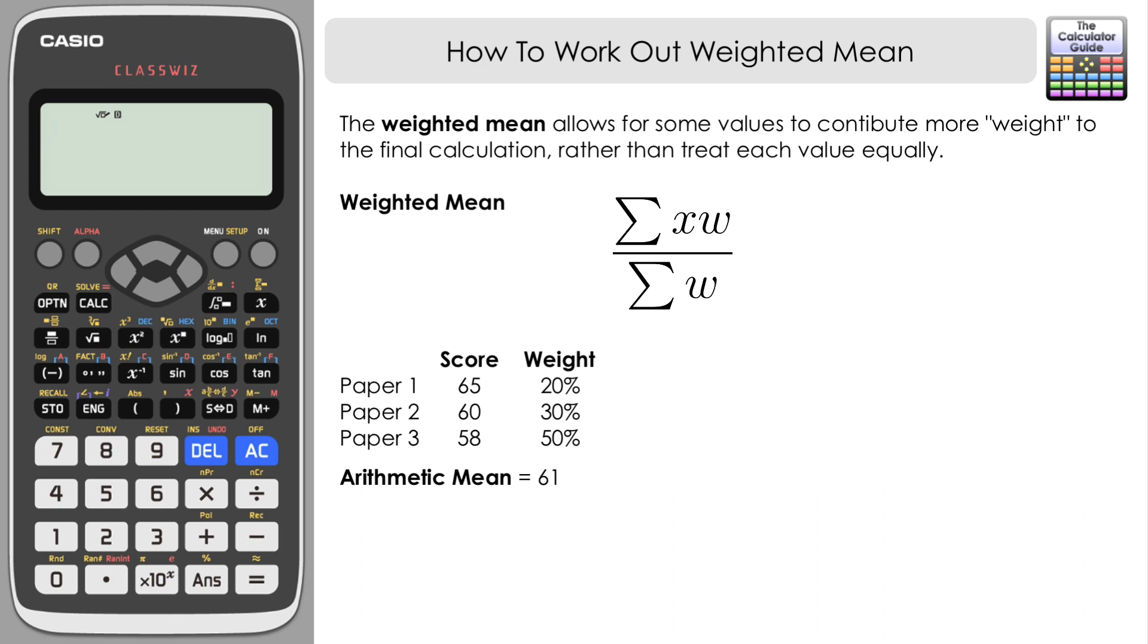Let's use the formula. We want the fraction button and then we want to multiply each of our scores by their respective weights. There's two ways to approach this, so let's start by using the percentages as they are. We're going to have 65 multiplied by 20, and remember that we're summing, so it's plus 60 times 30 plus 58 times 50. Then on the bottom we want the sum of the weights. This is a percentage so the sum of the weights is going to be 100, 100 percent.